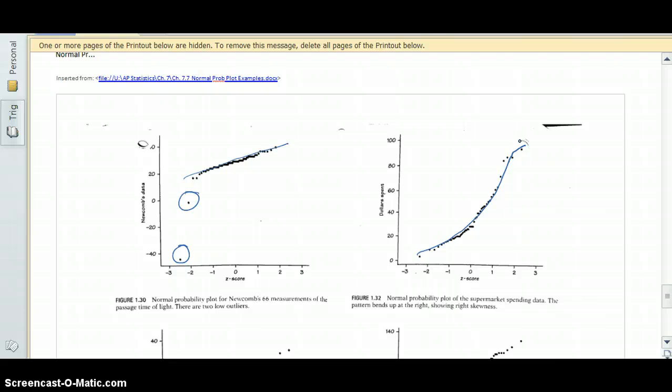You guys are not going to be responsible for knowing which way it's skewed based on a normal probability plot. Basically you see that it's curved, so our data is not normal.